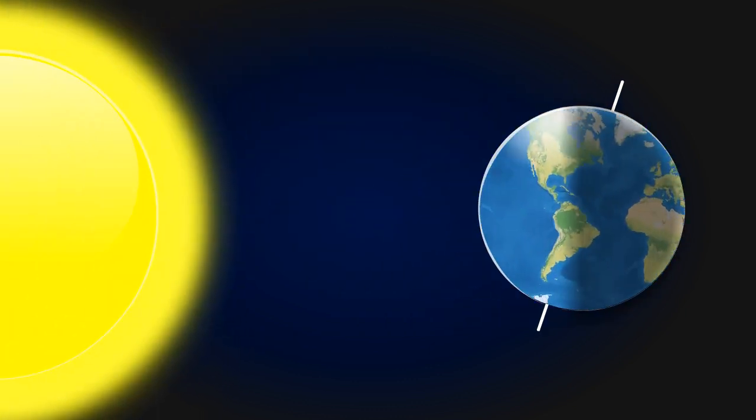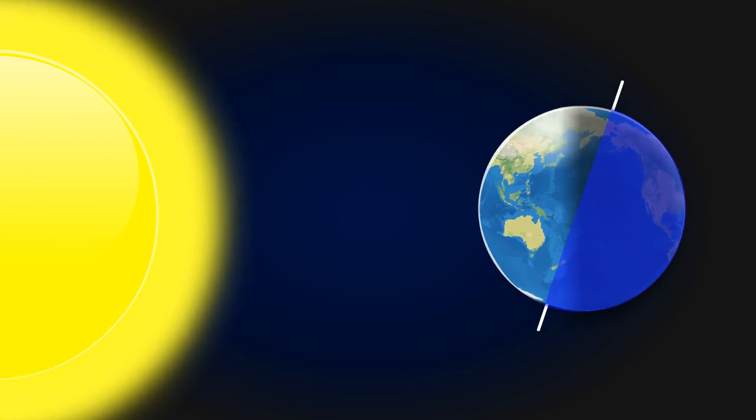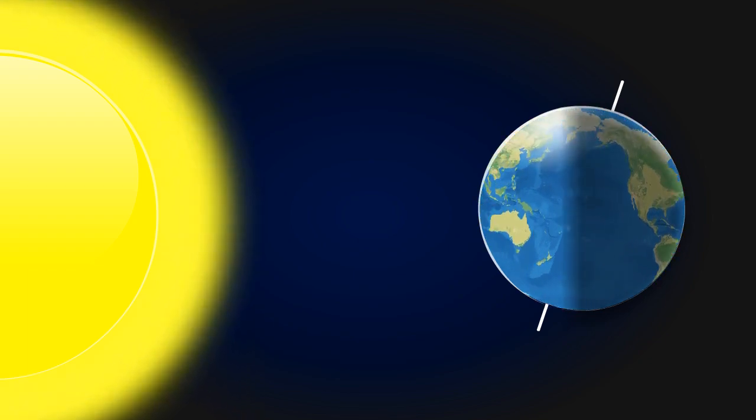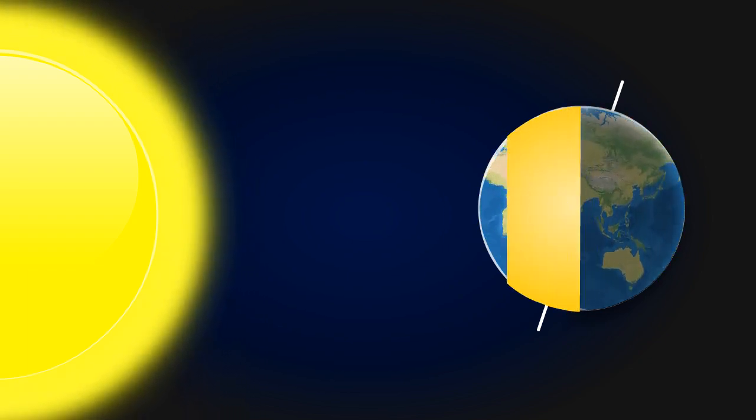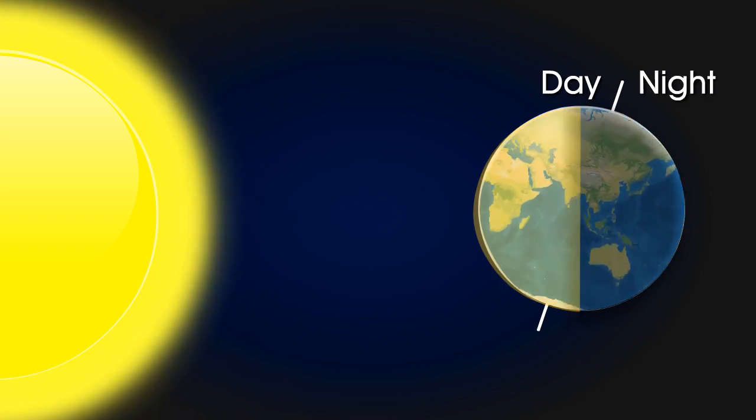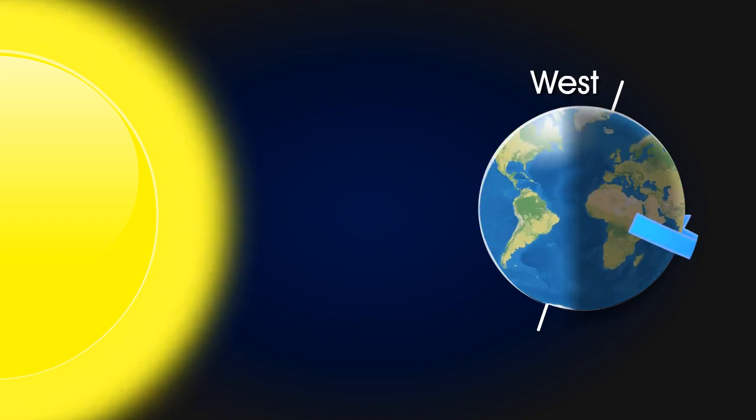The Earth completes one rotation in 24 hours or one day. As the Earth rotates, the side facing the Sun experiences day, and the side away from the Sun experiences night. The Earth rotates from west to east.